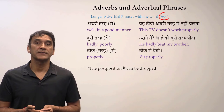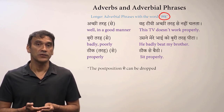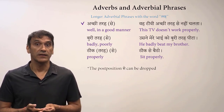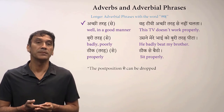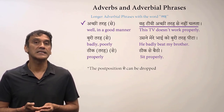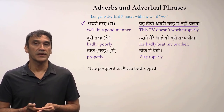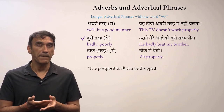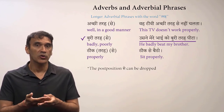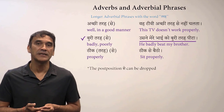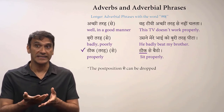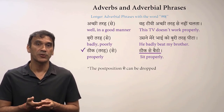Longer phrases with the word tarha can also be used with the postposition se. Achhi tarha se — well, in a good manner. Woh TV achhi tarha se nahi chalta — This TV doesn't work properly. Buri tarha se — badly, poorly. Usne mere bhai ko buri tarha pita — He badly beat my brother. Thik tarha se — properly. Thik se betho — Sit properly.